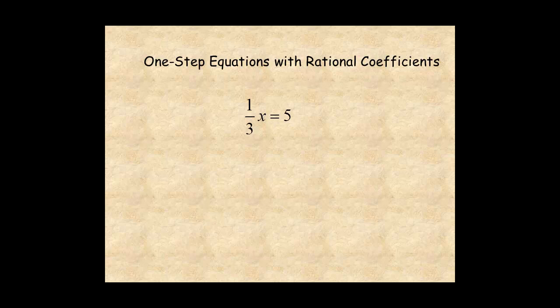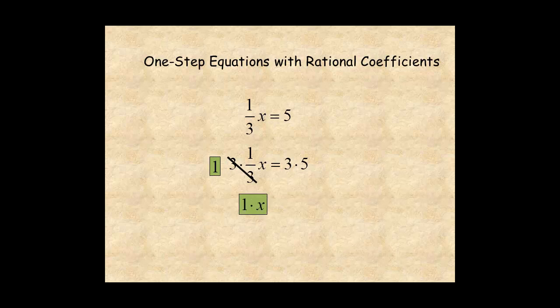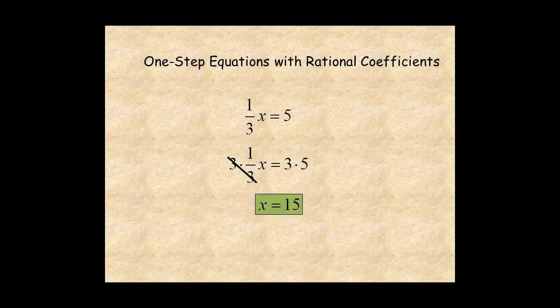For this example, begin by multiplying both sides of the equation by 3 — the inverse of the coefficient 1 over 3. On the left, 3 times 1 over 3 equals 1, and you get 1 times x, which is just x. On the right, 3 times 5 equals 15. The solution is x equals 15. Remember to check the solution.